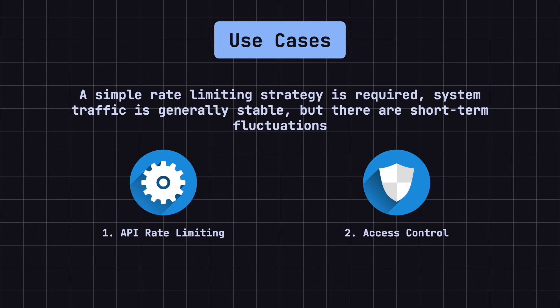The fixed window counter algorithm is suitable for scenarios that require a simple rate-limiting strategy, where the overall system traffic is steady but has short-term fluctuations. It is commonly used for API rate limiting, controlling the number of requests per time period to avoid system overload. Additionally, it can be effective in access control scenarios like limiting login attempts to prevent brute-force attacks.